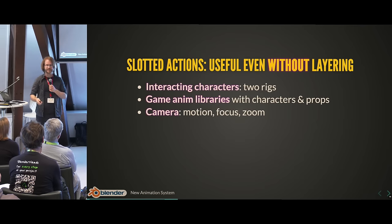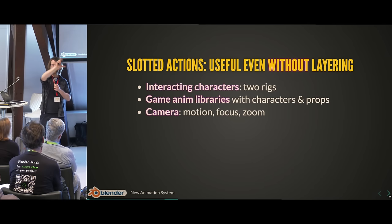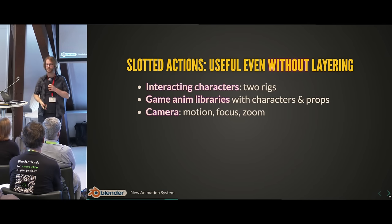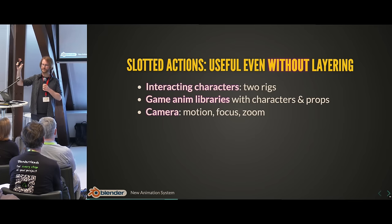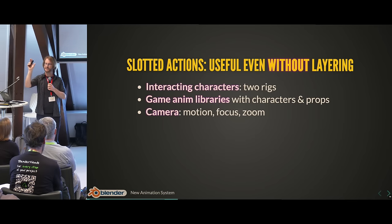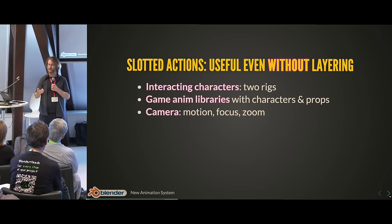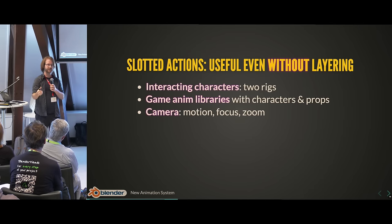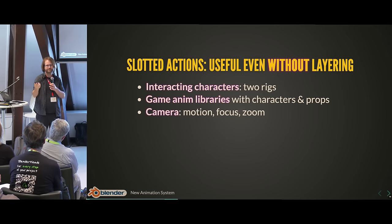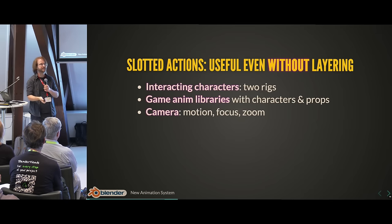Who here is familiar with Blender's data model where you have objects but then object data that's separate? Cameras follow that too — you have the camera object which defines its motion in space, but separate camera data that defines its zoom, focal plane, and all those things. Both get separate actions right now. So if you fully animate a camera, you actually get two different actions, even though that's conceptually one animation. It'd be nice to put those in the same action.